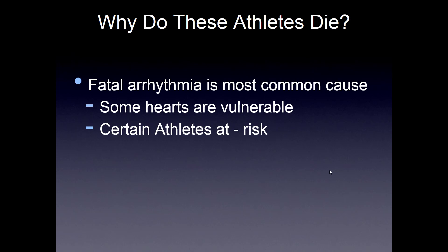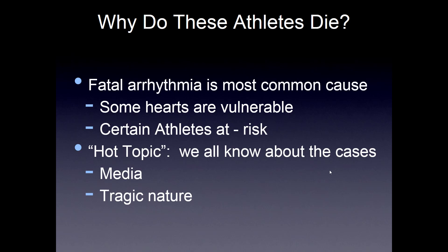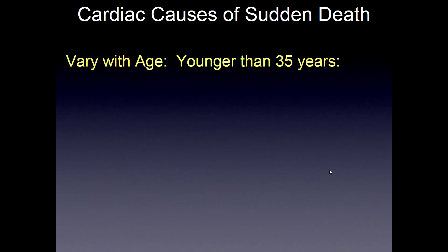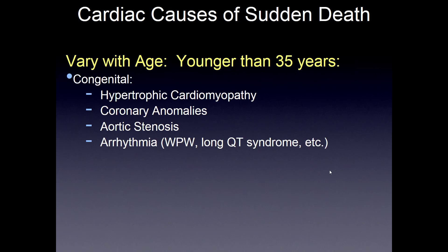What are the causes of death? Fatal arrhythmia is the most common cause, and some hearts are vulnerable and certain athletes are at risk. It's a hot topic because we know about these cases — it usually hits the media and the tragic nature really sensationalizes when this happens. The causes vary with age. In athletes younger than 35 years, the majority of causes are congenital: either hypertrophic cardiomyopathy, coronary anomalies, aortic stenosis, or arrhythmias such as long QT syndrome.